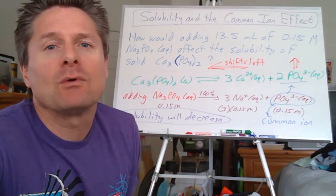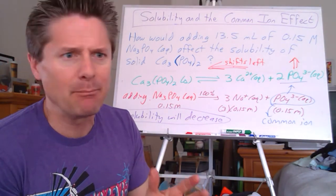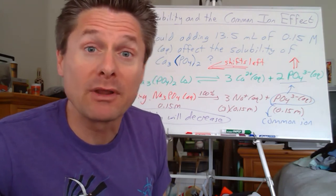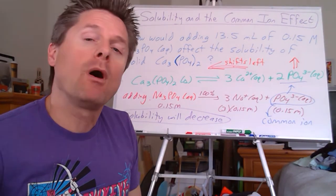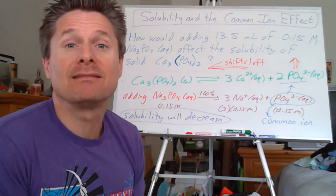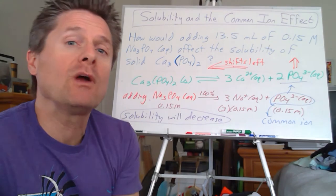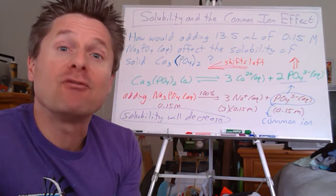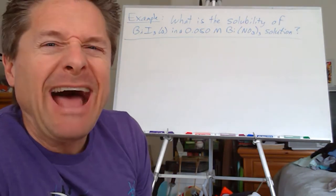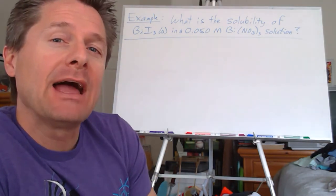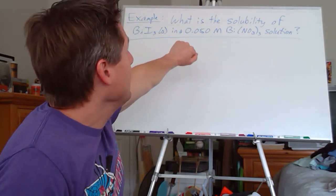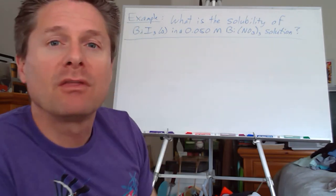Let's actually calculate that in the next problem. In the last video, we calculated the solubility of BiI₃ — bismuth-3 iodide — and got 7.7 × 10⁻³ grams per liter in pure water. What we'll do is add something containing either the bismuth-3 ion or the iodide ion and see how that impacts solubility compared to that prior number. So: what's the solubility of bismuth-3 iodide in a 0.050 molar solution of bismuth-3 nitrate?